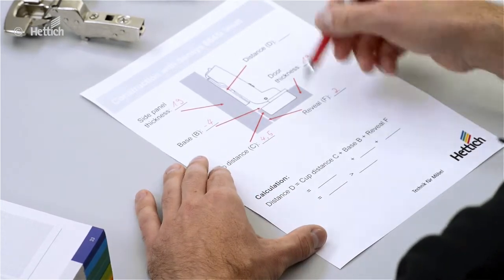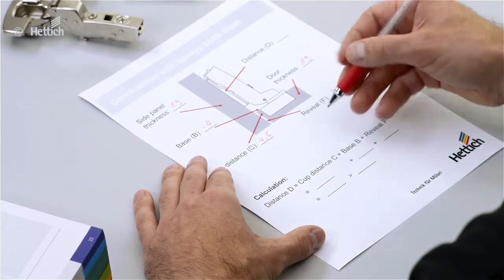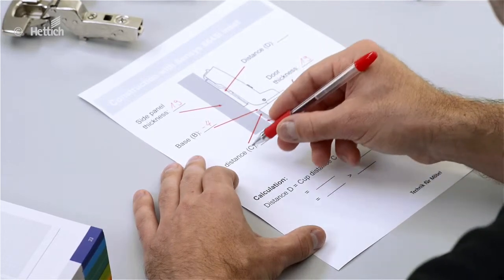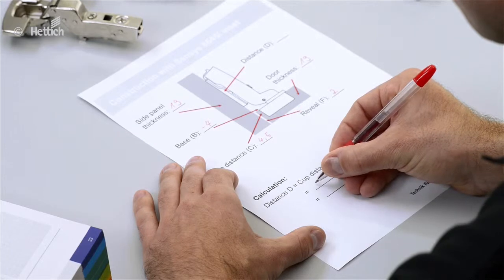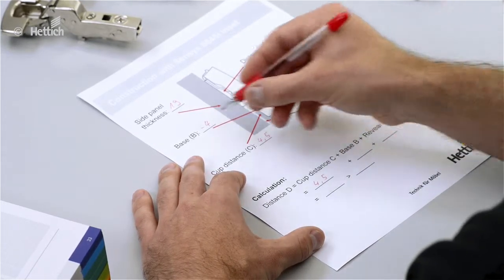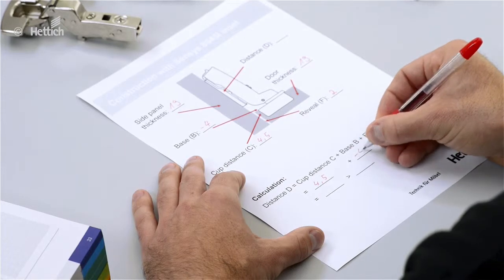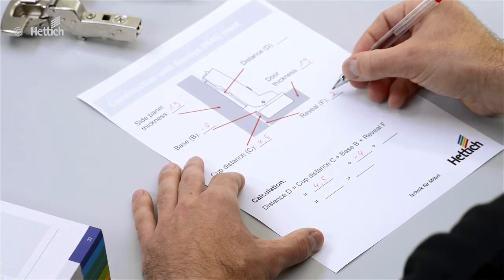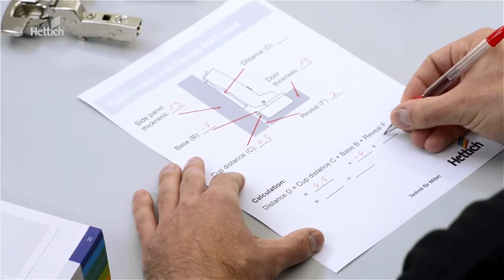So then we can fill in the values into the formula. Cup distance C 4.5 millimeters plus base B minus 4 and the reveal 2 millimeters.